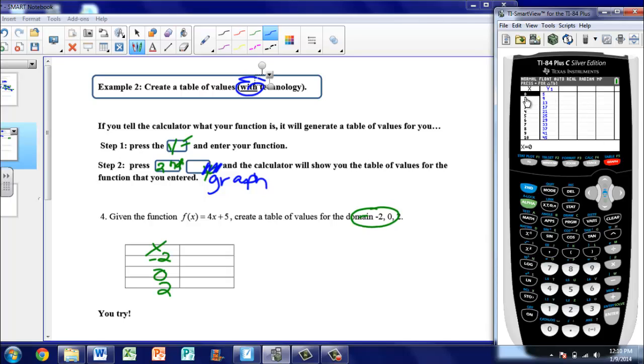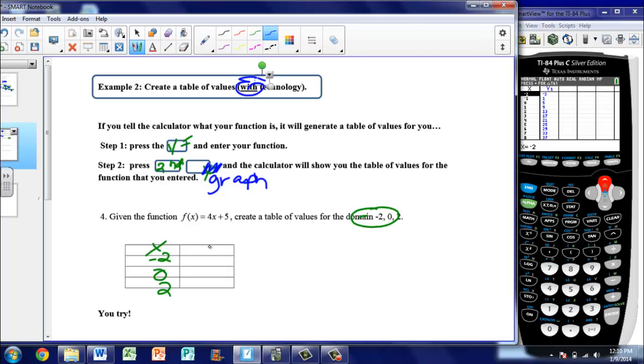So when I press that, notice it gives me a table of values. When x is 0, y is 5. When x is 1, y is 9, and so on. So all I have to do then is find the values that we were looking for over here in my table. And if you don't see it, this goes to 0. If I want to go up higher, meaning I want to find those negative numbers, all I have to do is press the up arrow and I can move through my table. So I can see that when x is -2, y is -3. So I go to my table. When x is -2, y is -3.